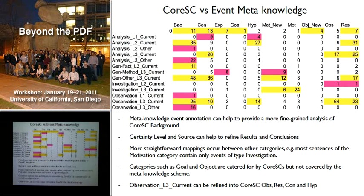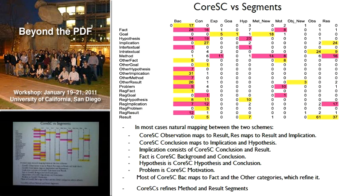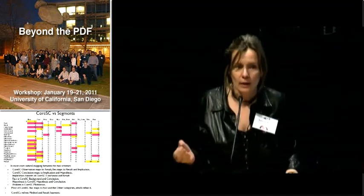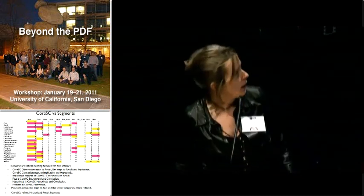I'll show some graphs just to give an impression that we can do this. We looked at one paper and saw rather large overlaps — this is between Corpus C and event meta-knowledge. One finding is that certainty level and source can help refine results and conclusions. Annotating the same corpus with different annotation schemes, we find we need to update our annotation schemes — and I think that's the main lesson. The background column can actually be split: you are either referring to someone else's hypothesis, implication, or result. These are different types of annotation depending on whether you're referring to a method or an implication.